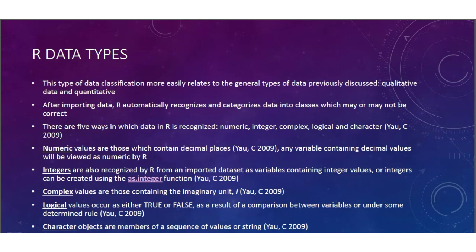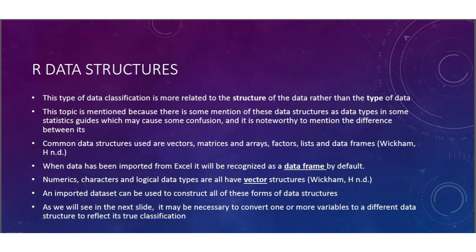Logical values occur as either true or false as a result of comparison between variables or under some determined rule. Characters: objects or members of a sequence of values are strings. So now that we understand the groups that data can be classified into differently, how do we know if R has recognized our data accurately?